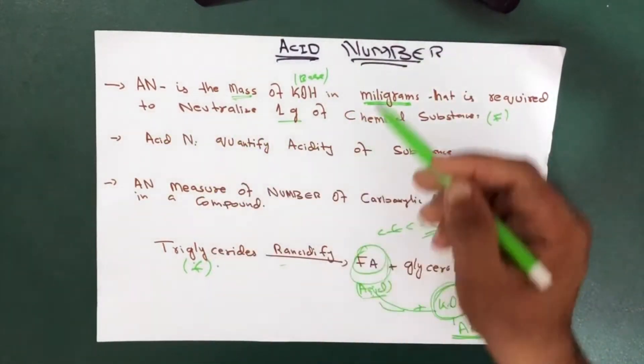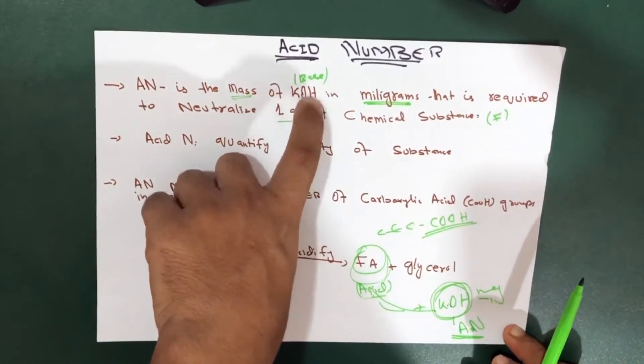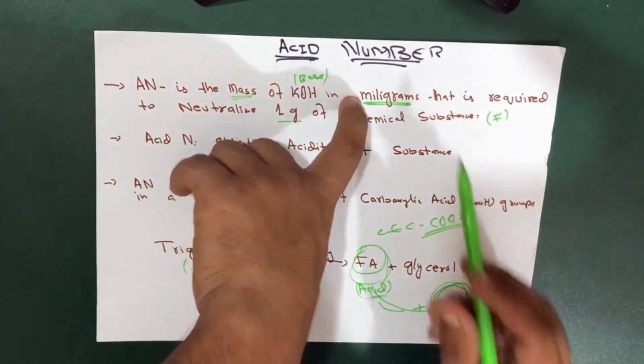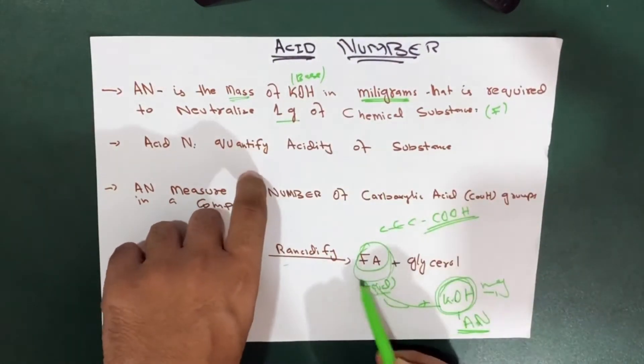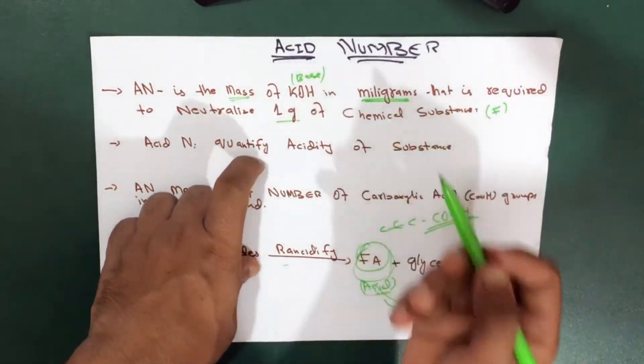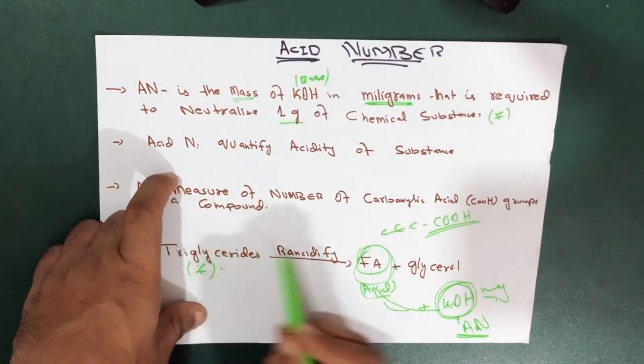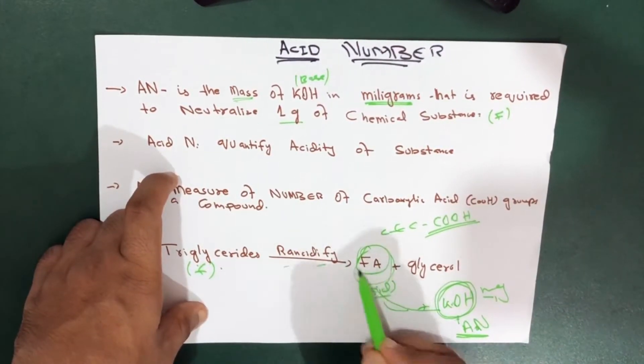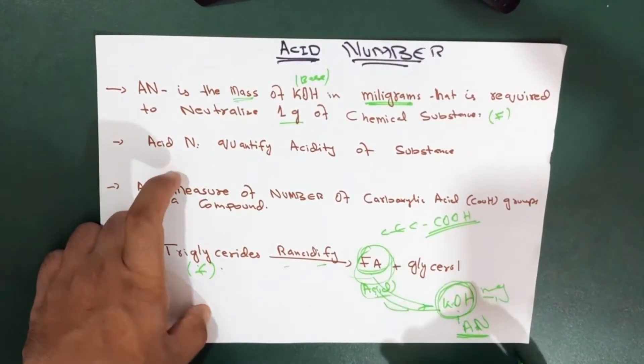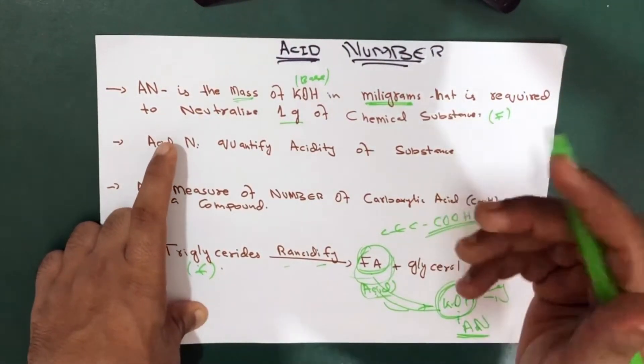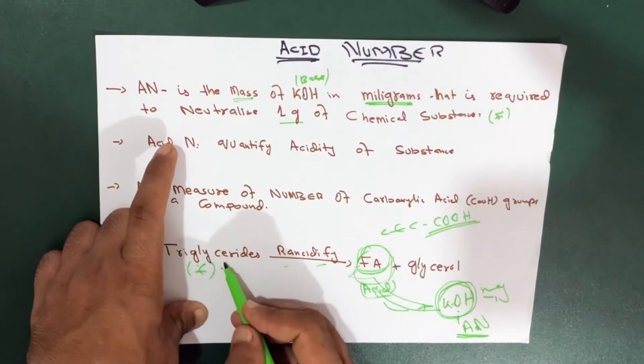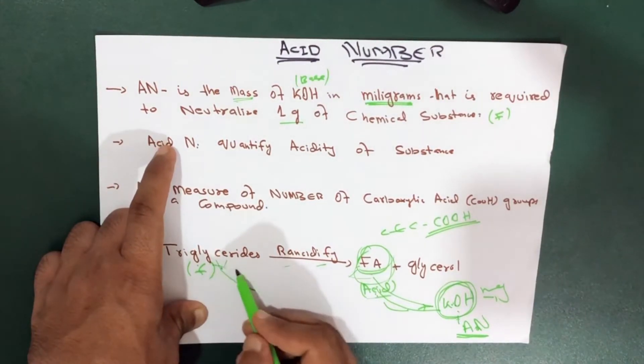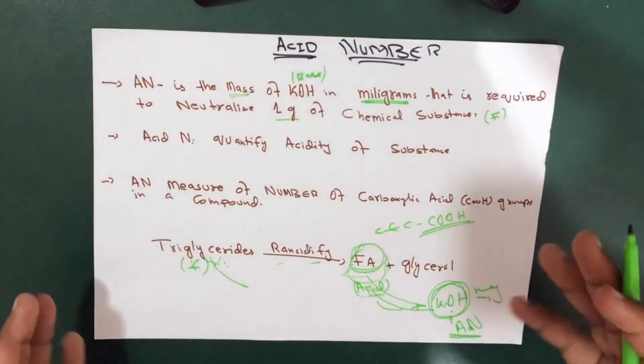So what is the acid number? It's the actual mass of the potassium hydroxide in milligrams that is required to neutralize what? One gram of fats which is in the form of fatty acid. How do we neutralize one gram of fats? It's usually rancidified. We convert it and change it into fatty acid. Fatty acid reacts with the potassium hydroxide, which means we are actually neutralizing this fat. So this is a very easy concept to understand. So this is all about the acid number.